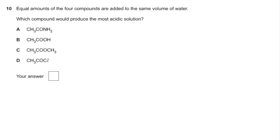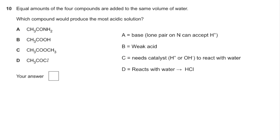Number ten. This one's testing your knowledge of functional groups. So molecule A is a base because the lone pair on the nitrogen can accept an H+ ion, so this won't be acidic. B, ethanoic acid is a weak acid, so it is acidic but not really very much. C is an ester and doesn't react with water unless you've got an H+ or OH- catalyst. D actually reacts with water, that's an acyl chloride, and makes HCl, so therefore that's going to be the most acidic, and so the answer was D.